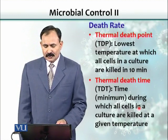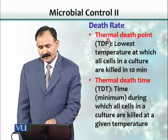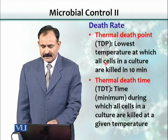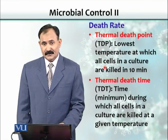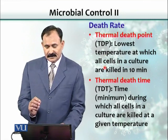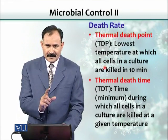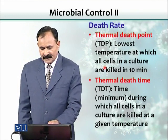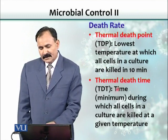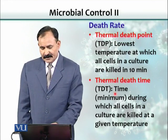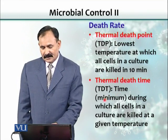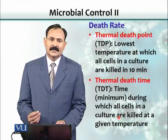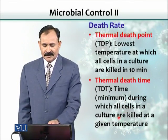There are two more useful terms to know. One is thermal death point, which is the lowest temperature at which cells in a culture are killed in 10 minutes — a specific temperature paired with a fixed time of 10 minutes. The other is thermal death time, which is the minimum time during which all cells present in a culture are killed at a given temperature. These terms are very useful.